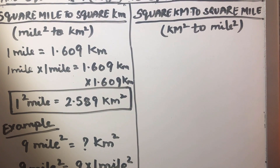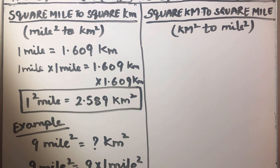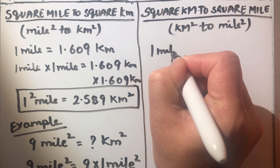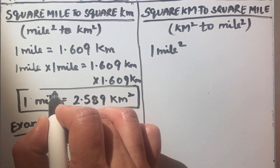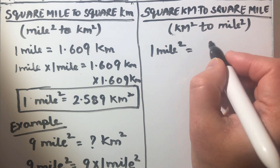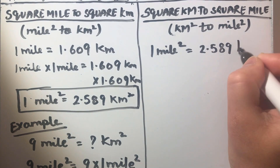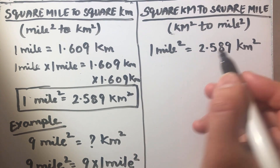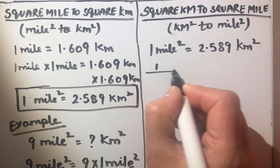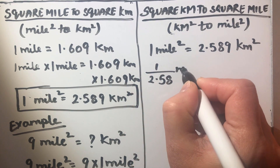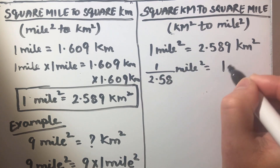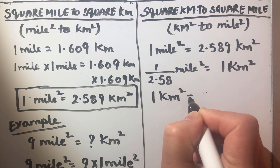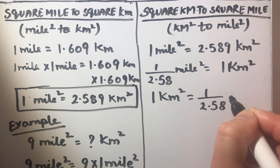Now let's learn how to convert from square kilometers to square miles. From this relation we know that 1 square mile is equal to 2.589 square kilometers. So to find how much is 1 square kilometer, we need to divide both sides by 2.58. This gives us 1 over 2.58 square miles equals 1 square kilometer. So 1 square kilometer is equal to 1 over 2.58 square miles.